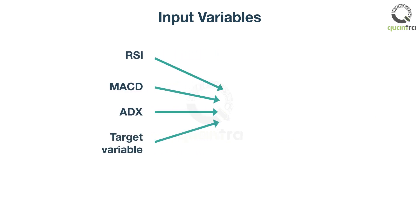The feature variables and target variable are passed to machine learning models so that the model can learn the relationship between them.